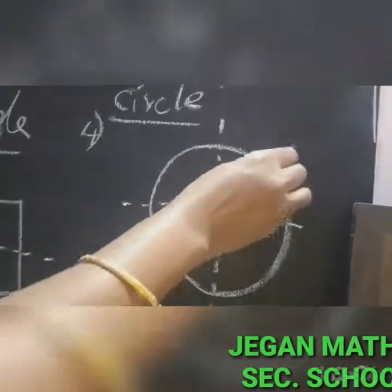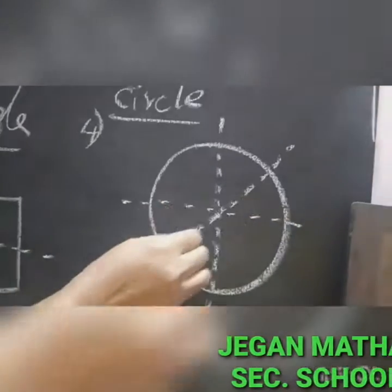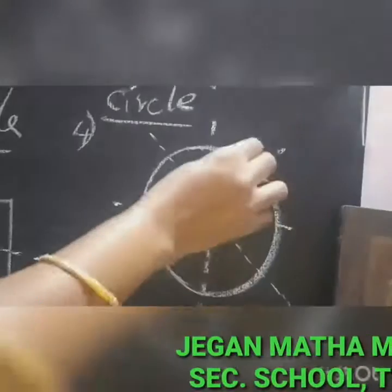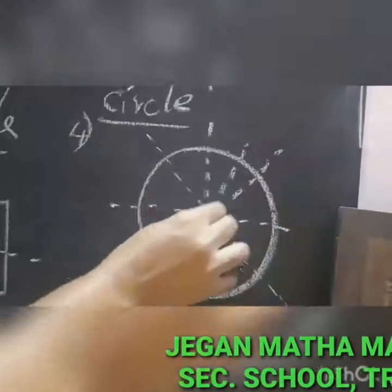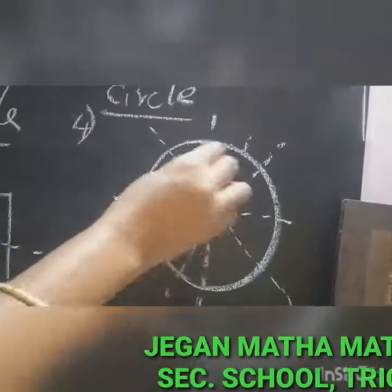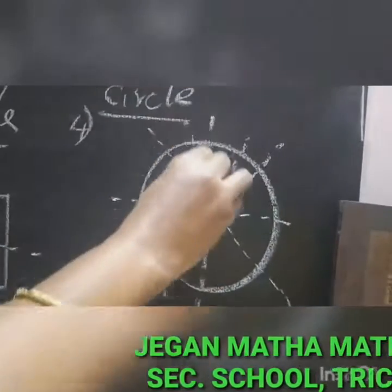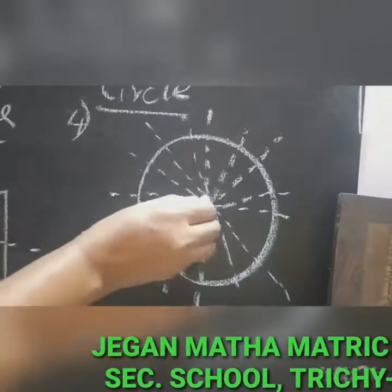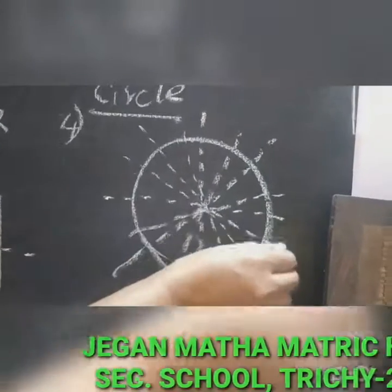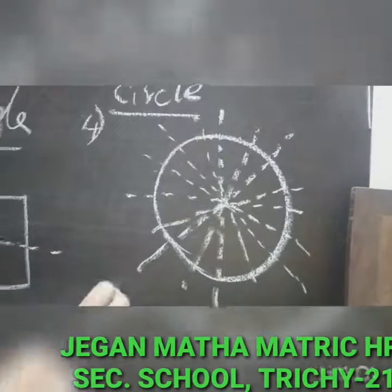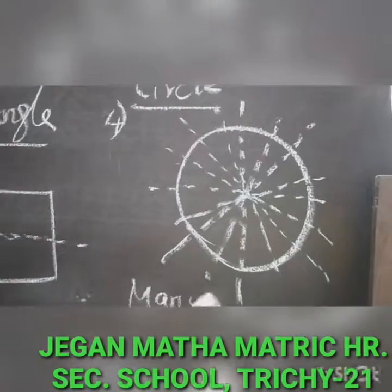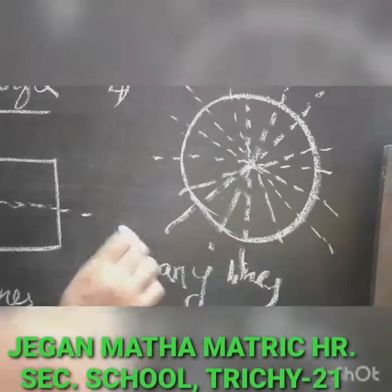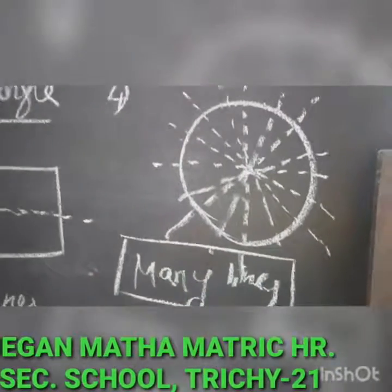The next shape is a circle. In a circle, you can fold it many times in many directions. So we have many lines of symmetry for a circle — you can fold the circle many times to get symmetrical halves.